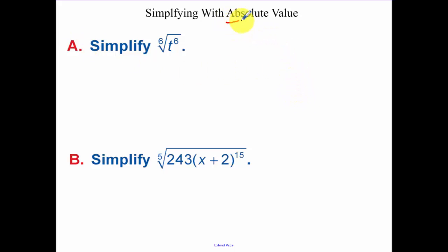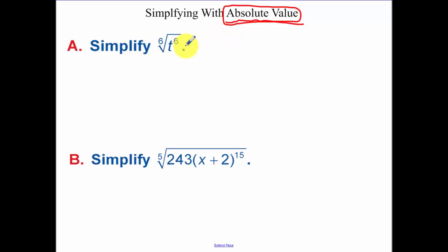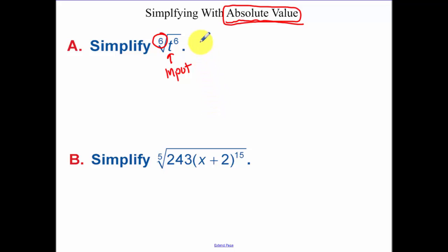Simplifying with absolute value — pay close attention here. For the 6th root of t to the 6th: t can be positive or negative as input, but the 6th root always gives a positive output. So how do I make a positive or negative input always positive? That simplifies to the absolute value of t.